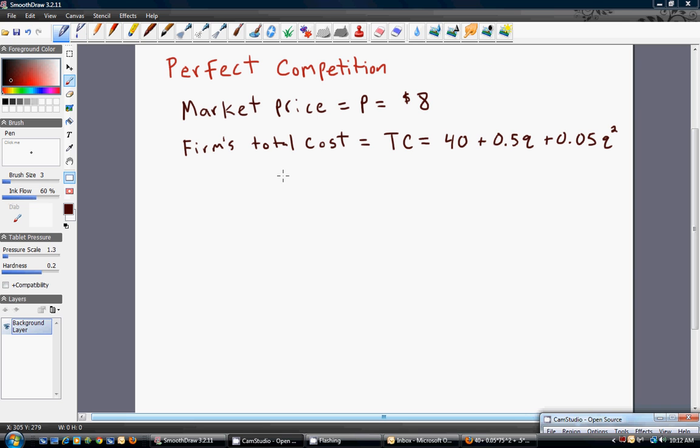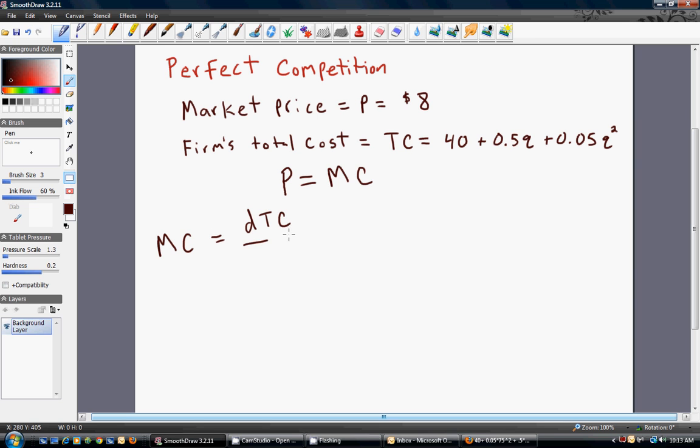First thing we need to do is recognize that in perfect competition, profit maximization requires that the firm produce the amount of output where the price equals the marginal cost. We have the price, it's $8. What we don't have is marginal cost. We can find marginal cost from the total cost equation. Marginal cost is the derivative of the total cost equation with respect to output. So we're going to take the derivative of this, and we get 0.5 plus 0.1q.